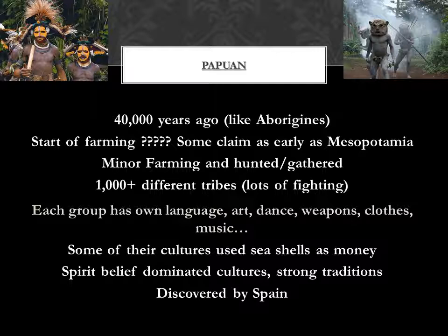To give you an idea of how many people there are, there are over a thousand different tribes of Papuans on this island — over a thousand different tribes, each one with its own language, art, dance, weapons, clothes, music, ideas of right and wrong, and religious ideas. This is going to lead to a lot of fighting, and if you study the history of the Papuans, you'll find quite a bit of evidence of fighting.